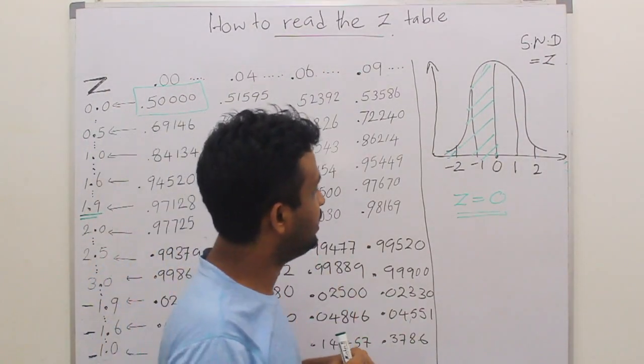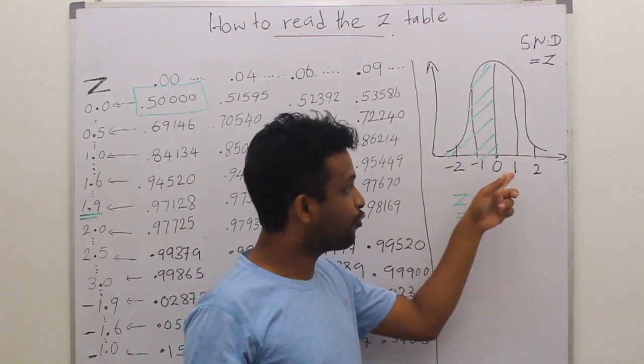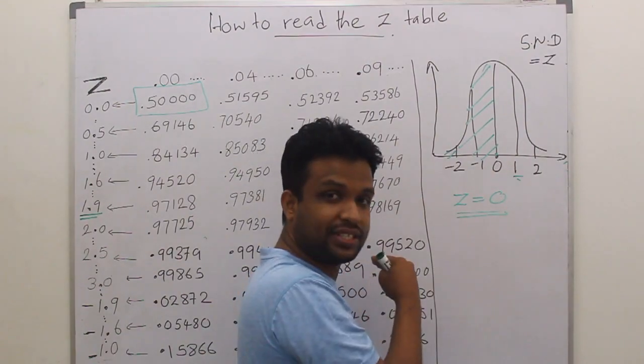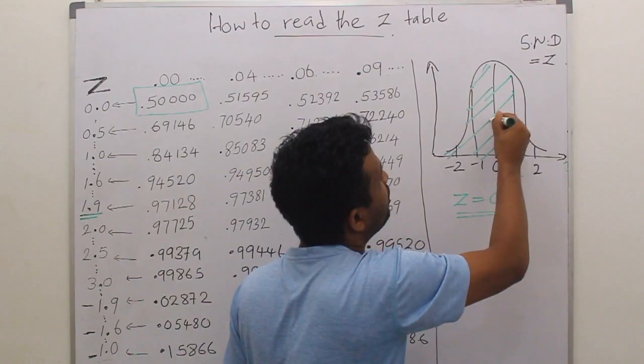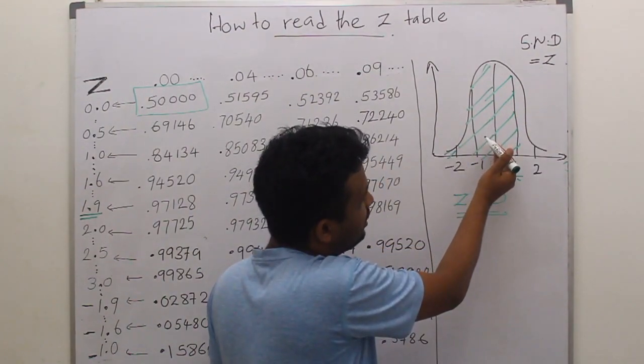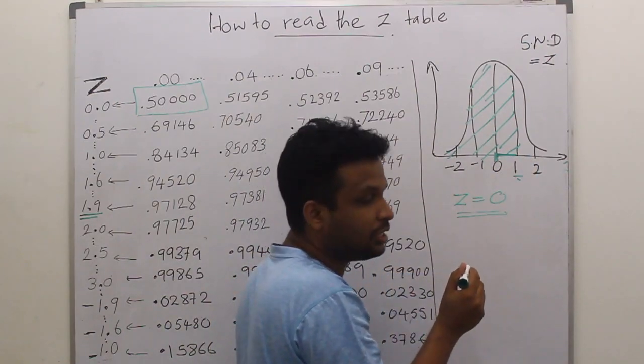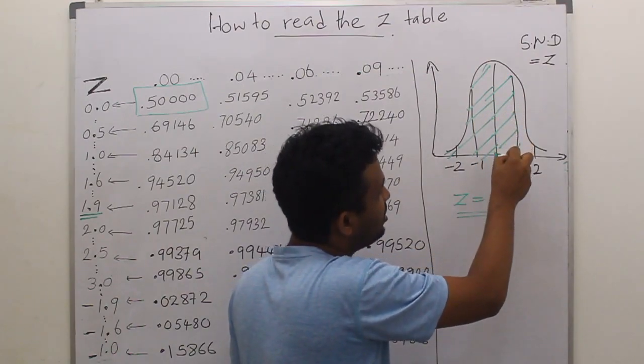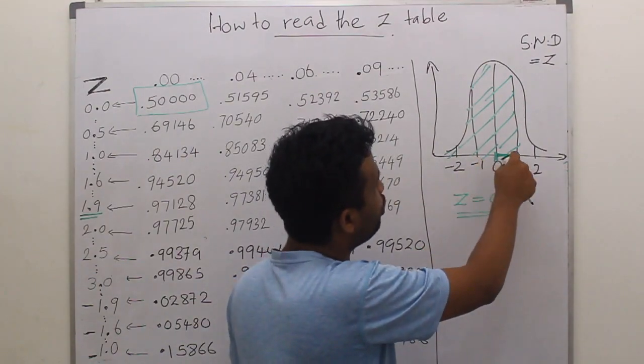Now, we know that the area under the curve towards left from Z score 1, or towards the lower side from one standard deviation, this total area. We know that we have 50% up to here and we have another 34%, because we know that plus or minus 1 SD is 68%. So in this area we have 34%.